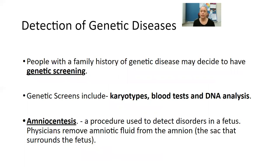People with a family history of genetic disease may decide to have genetic screening. Genetic screens include things like karyotypes, blood tests, and DNA analysis. Many people have genetic screening to test whether they carry the trait for, say, breast cancer — if several family members have had it, they may choose to do this so they can be proactive in trying to prevent that cancer from forming.